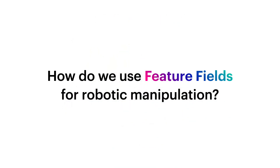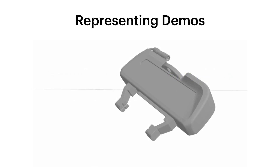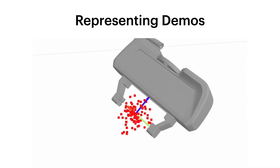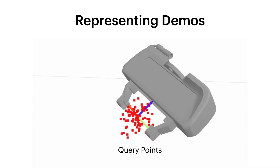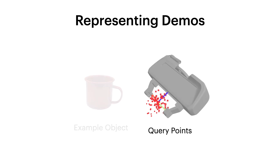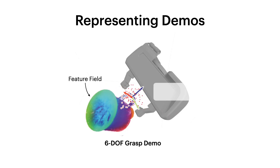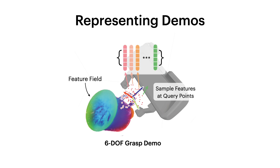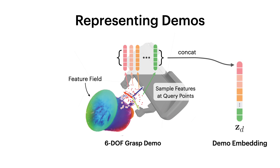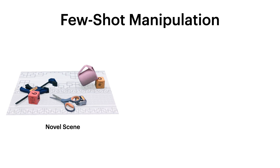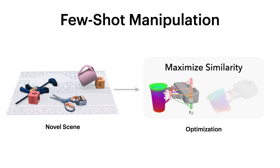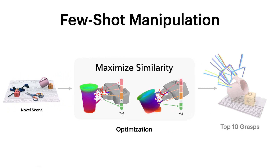How are we going to use feature fields for robotic manipulation? Many manipulation tasks may be formulated as learning to predict six degrees of freedom poses. We can represent a demonstration of this type by the local context in the 3D feature field. To do so, we first sample a set of query points in the canonical frame of the gripper. Take grasping this red mug by the handle for example — we sample features in the feature field at the query points and concatenate them to get a local geometric and semantic representation of the demonstration. At test time, the robot is given a novel scene containing objects it has not seen before. The robot scans the scene and then performs optimization to find the grasp that maximizes its similarity to a small number of demonstrations. By optimizing for a grasp over the entire scene, we get the grasps for the pink mug shown on the right. We then use motion planning to find and execute a feasible grasp on the robot.